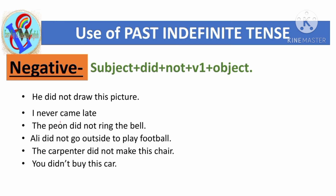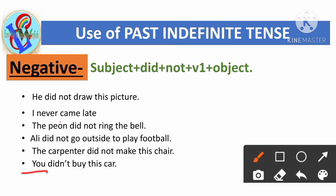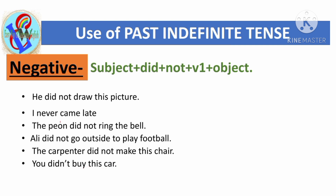'You didn't buy this car.' Here 'you' is the subject, and 'didn't' — which is the contraction of 'did not' — is used because it's a negative sentence. 'Buy' is the main verb in its first form, and 'this car' is the object.